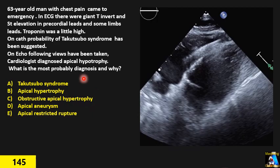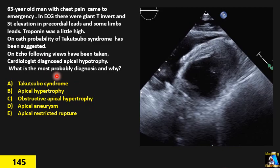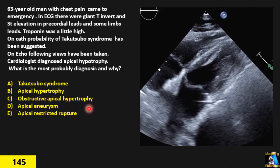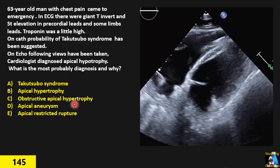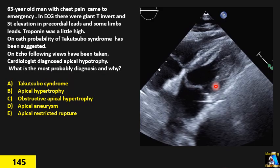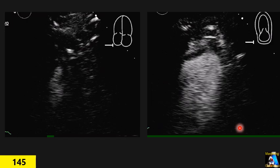What do you think? What is the diagnosis? If you choose any of the options, you must explain exactly what your logic and reasoning is. Is it: Takotsubo syndrome? Apical hypertrophy with aneurysm? Obstructive apical hypertrophy causing an aneurysm? Apical aneurysm? Or apical restricted rupture?